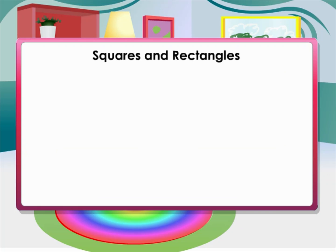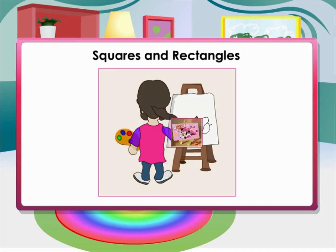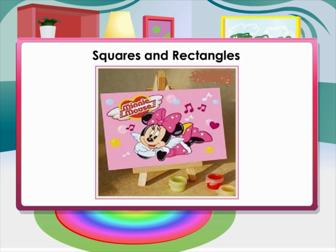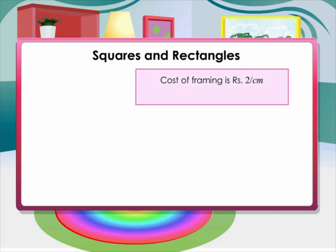Squares and rectangles: Neetu painted on her rectangular sheet of length 50 centimeters and breadth 40 centimeters. She loved her painting very much, so she decided to frame and laminate it. The cost of framing is rupees 2 per centimeter and the cost of lamination is rupees 1 per centimeter square.